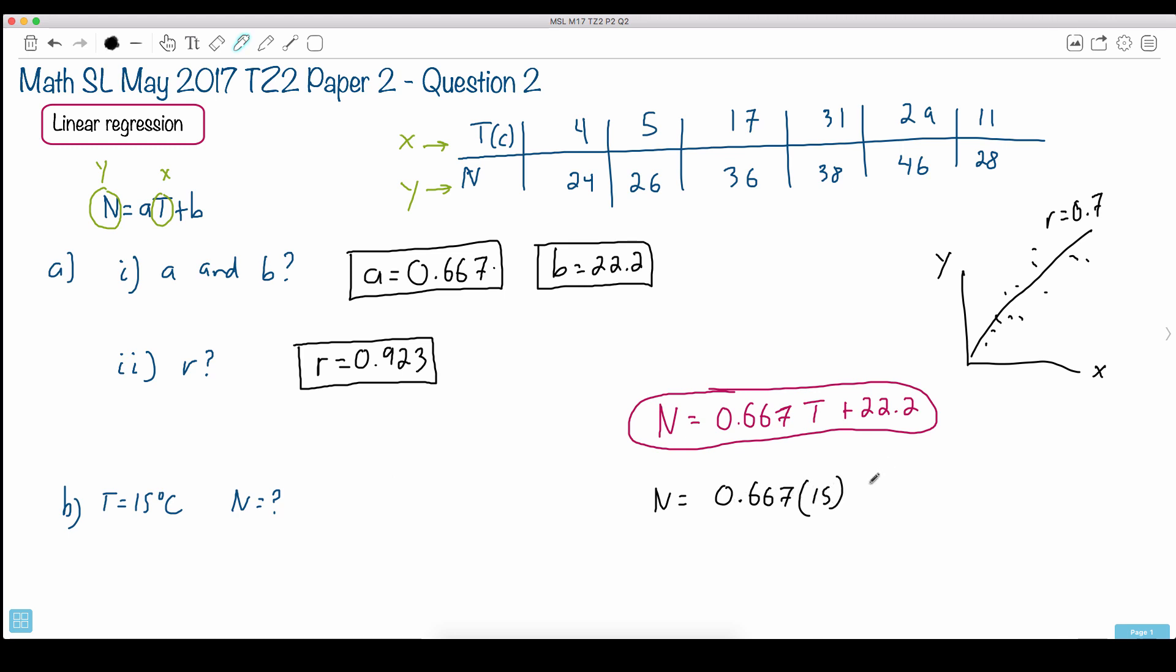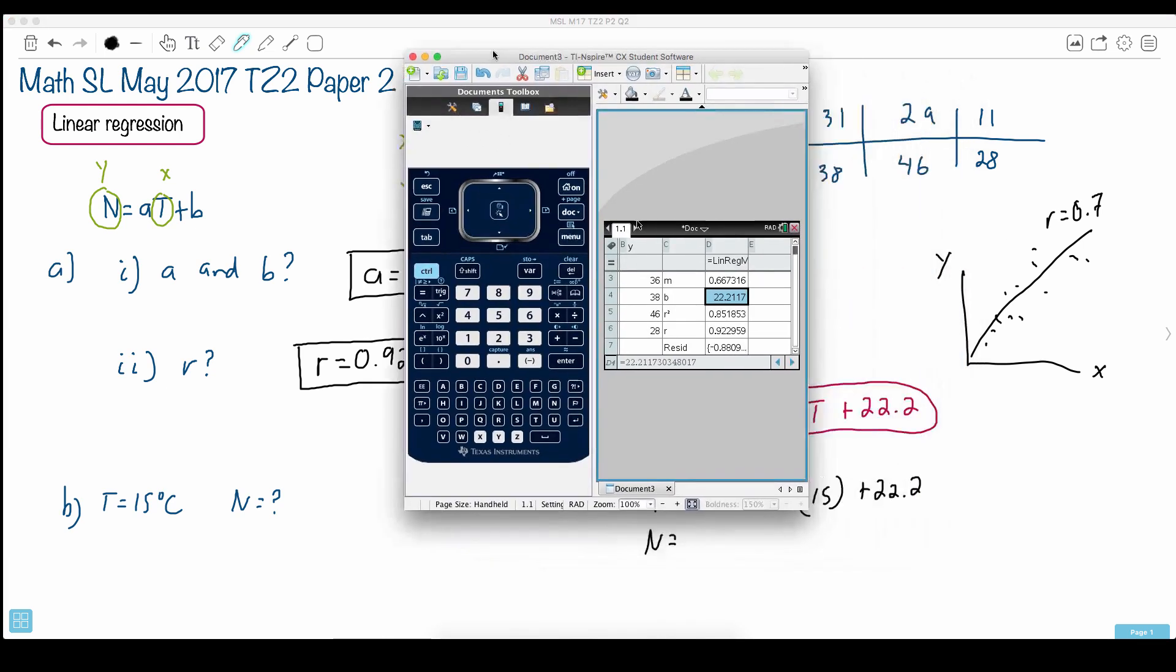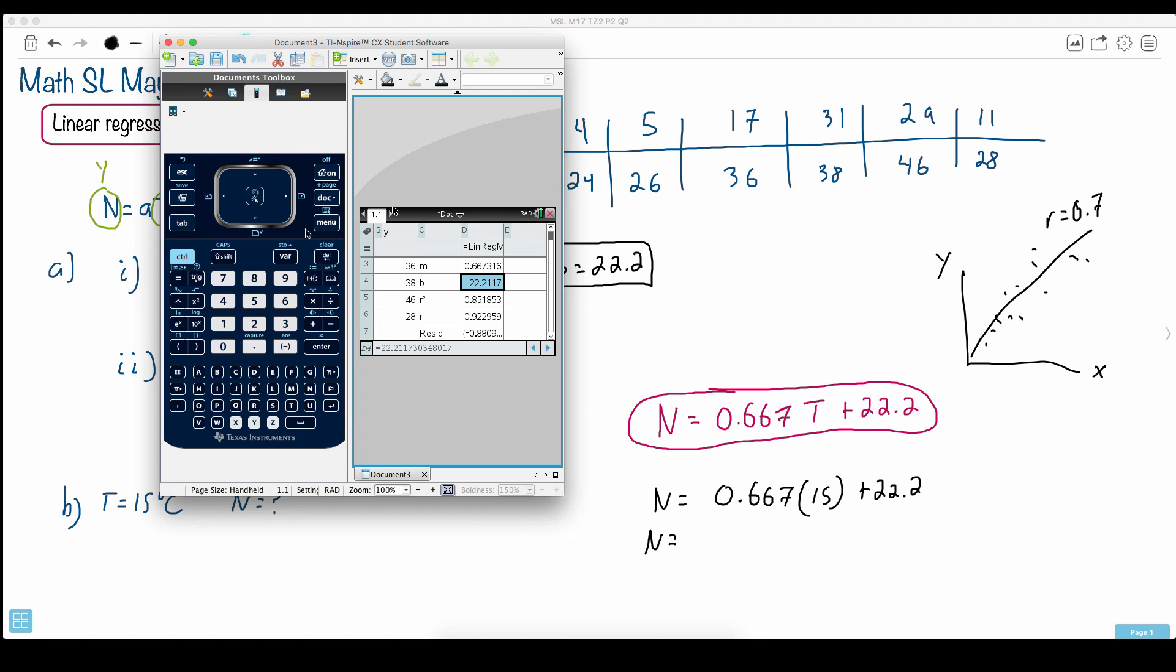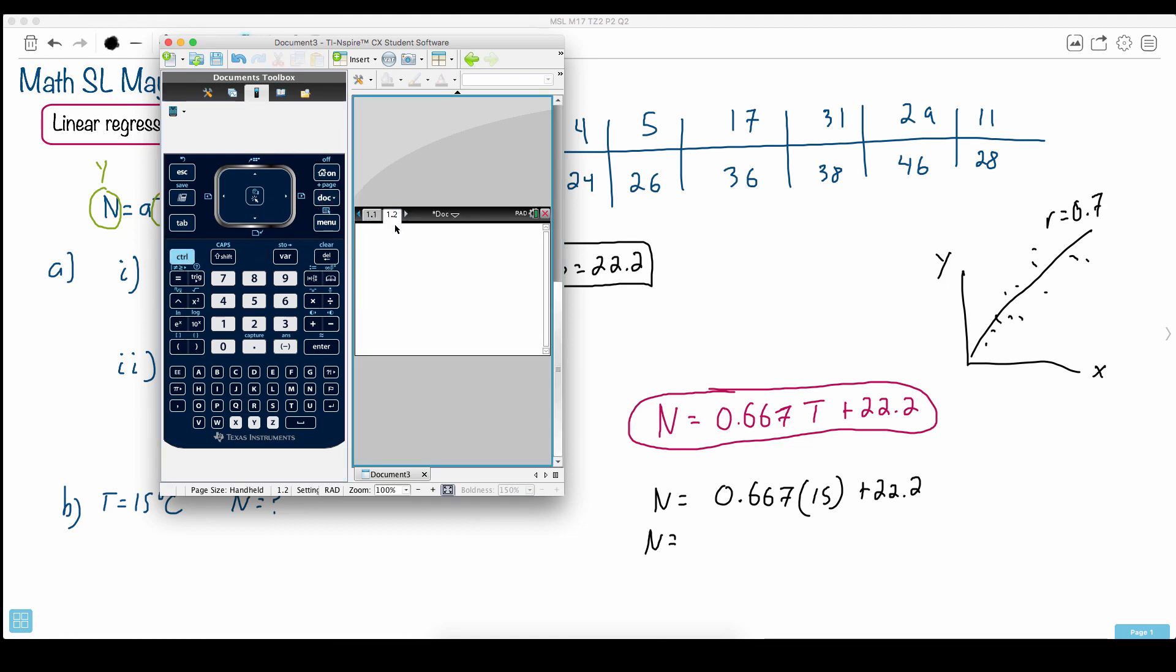So just go 0.667 times 15 plus 22.2. And if I do that on my calculator, let's see what I get here. So I'm going to go maybe to another page because I'd like to do a calculation here. And I'm just going to do that. So 0.667 times 15.